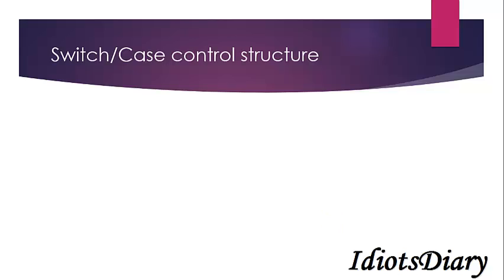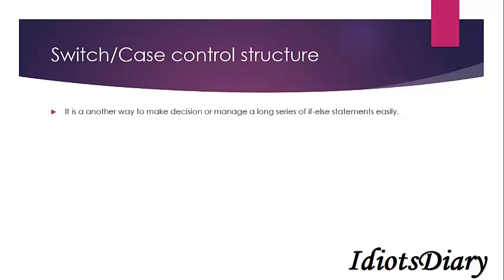Now we move to another topic: switch case control structure. Switch case is another way to make decisions in C. It manages a long series of if-else statements easily and makes your program easy to read and understand. In the background, switch case forms a jump table which performs comparisons faster than if-else statements.